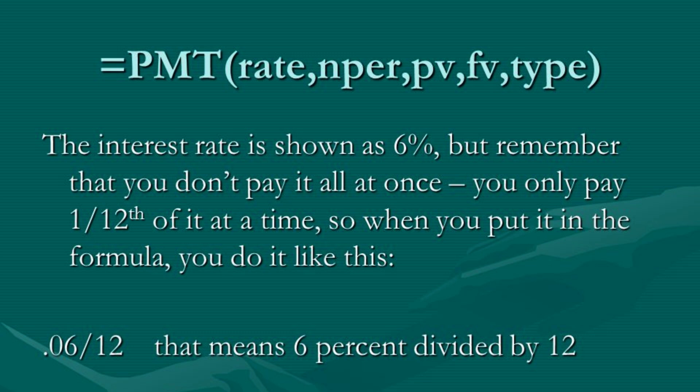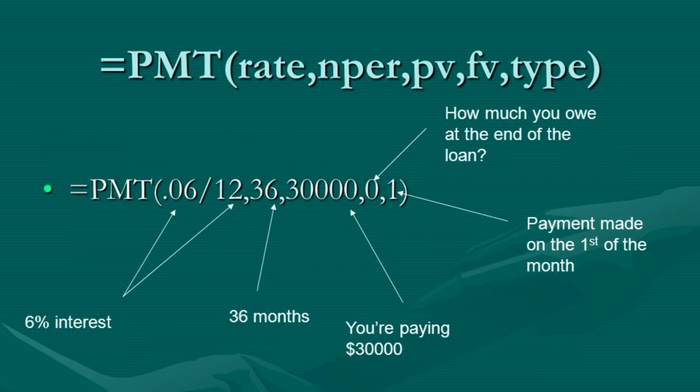For example, if you are planning to take out a loan to purchase a car, knowing the regular payment amount helps you determine whether you can afford the loan. If the regular payment amount is too high, it may not fit into your budget and you may need to consider a different loan amount or a longer loan term. Similarly, if you are planning to invest in a savings account or a bond, knowing the regular payment amount helps you determine how much money you need to set aside regularly to achieve your investment goal.